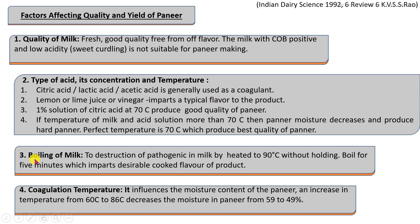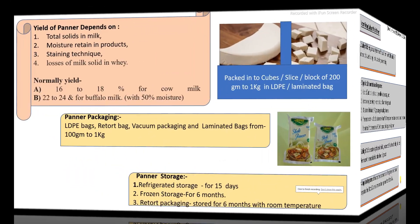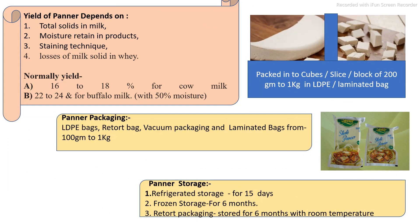The main factor affecting the yield of paneer is the initial solid content of the milk, which affects the yield quantity. Also affecting yield are the straining technique and loss of milk solids in the whey. As per the type of milk used, if cow milk is used, we get 16 to 18 percent yield of paneer. For buffalo milk, we get 22 to 24 percent yield of the final paneer, with 50 percent moisture content.